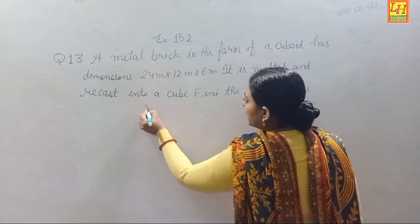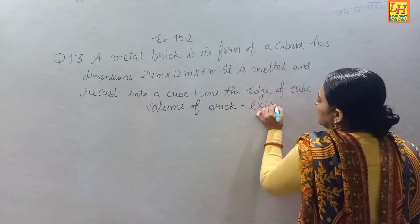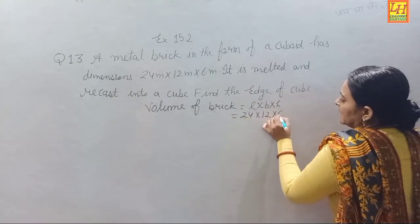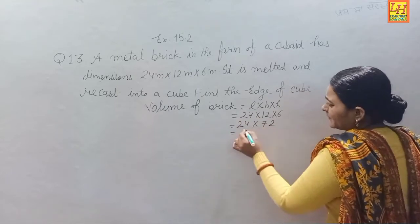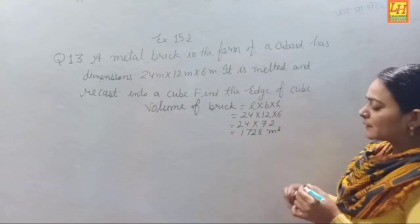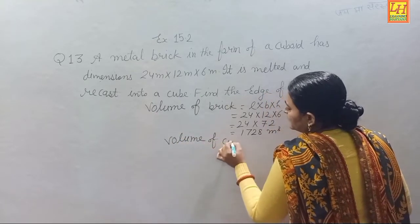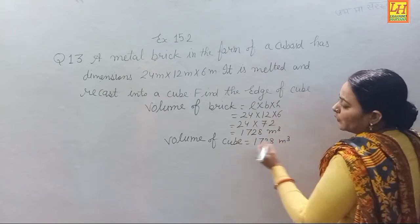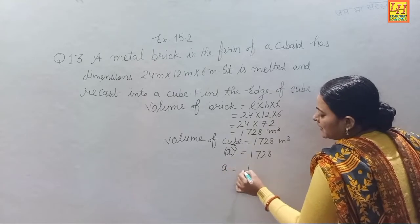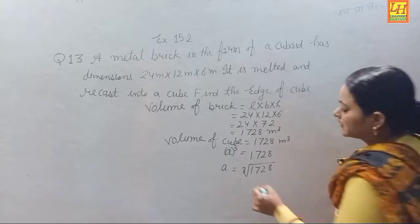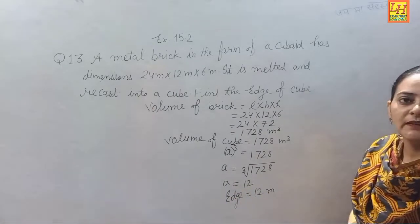First find the volume of the brick. Volume of brick = length × breadth × height = 24 × 12 × 6 = 1728 cubic meters. Since it is melted and recast into a cube, the volume of the cube is also 1728 cubic meters. Volume of cube = a³ = 1728, so a = cube root of 1728 = 12. Side of the cube is 12 meters.